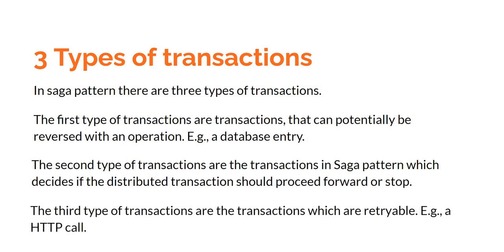The third type of transactions are transactions which are retryable — for example, an HTTP call or the email example. If we are sending an email through some sort of third-party email provider via HTTP call, we can potentially retry them. And with retry, there is almost always a guarantee that it is going to work, of course if we don't have any bug in the code.